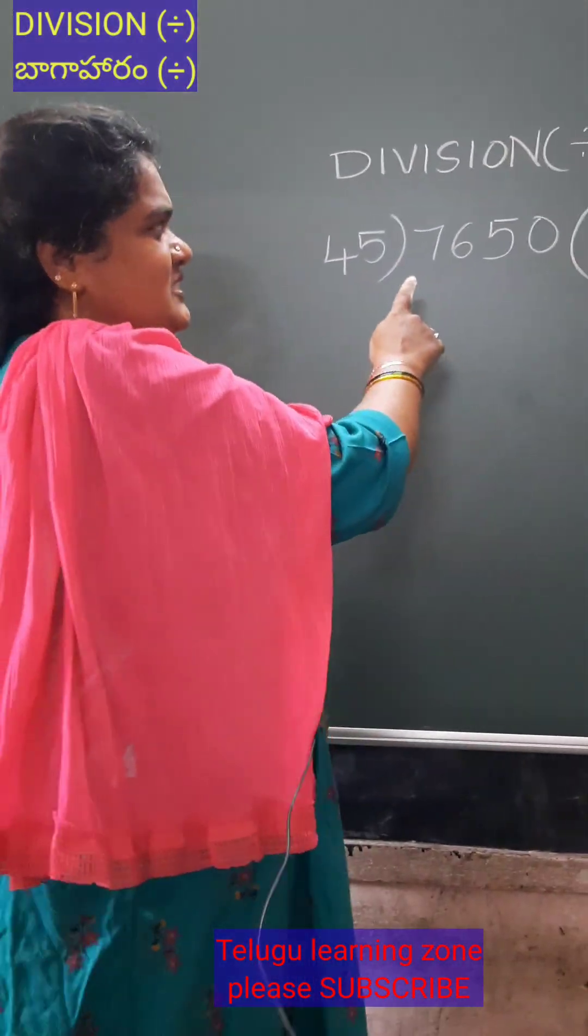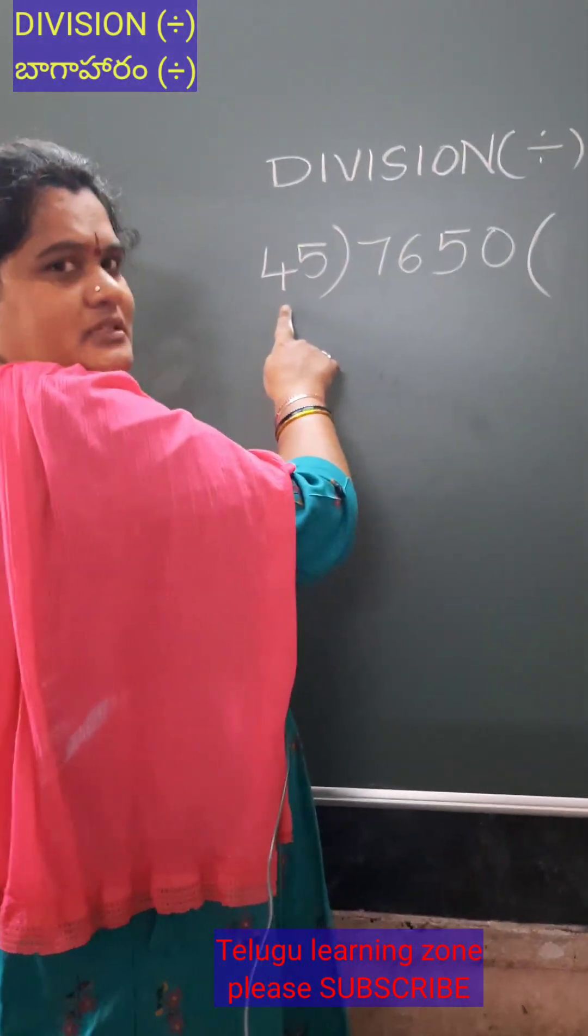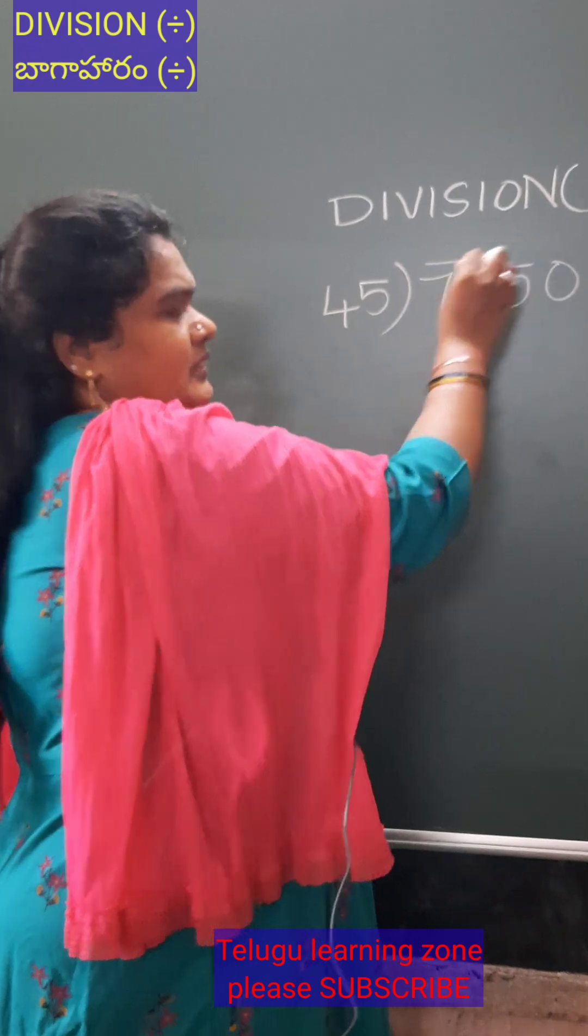Hello children, see this division. It is 2 digits. First we have to take here 2 digits.